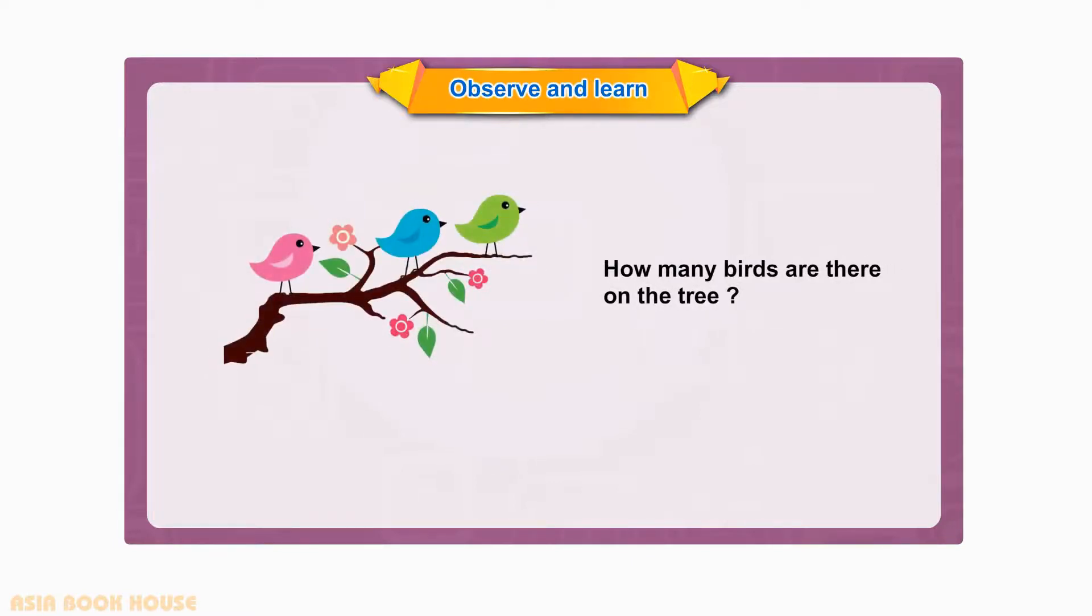How many birds are there on the tree? Three. One bird flies away. How many birds are there now? Two. One more bird flies away.